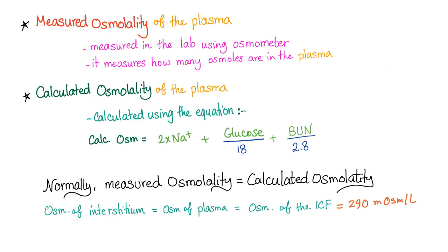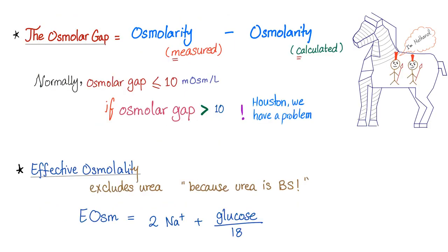Measured osmolality versus calculated osmolality: measured osmolality — just draw blood, send it to the lab, and the osmometer counts how many osmols are in the plasma. Calculated osmolality is different — we use the equation: 2 times sodium plus glucose over 20 plus BUN over 3. Normally, measured should equal calculated osmolality, or the difference is less than 10. But if the difference is more than 10, measured osmolality is greater than calculated by a margin greater than 10 — that's called the osmolar gap. Less than 10 is no problem; more than 10 is called a high osmolar gap.